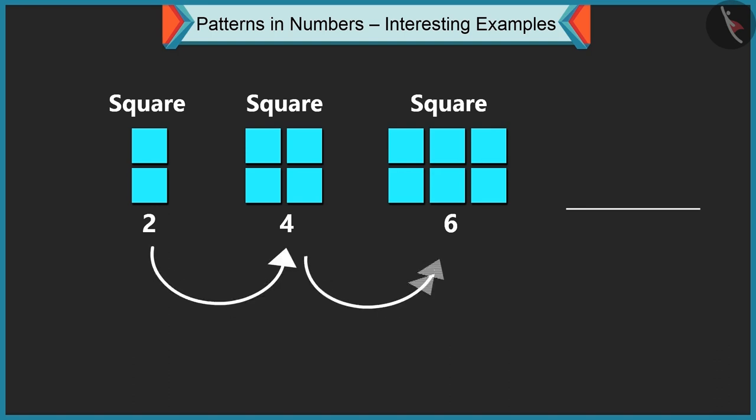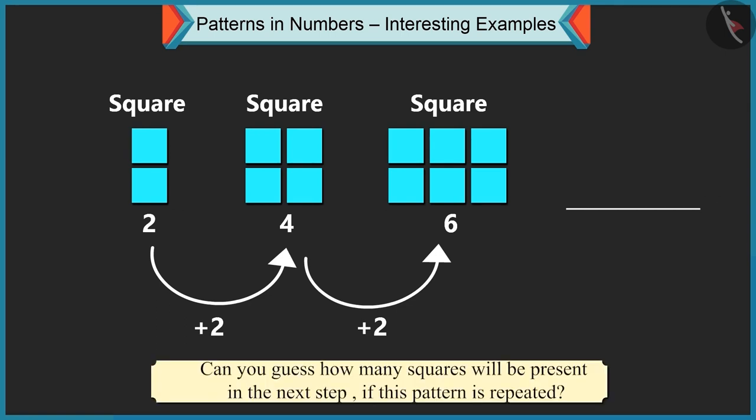In this pattern the numbers of squares are increasing. Yes, Chutki. Initially this pattern had two squares. Adding two more squares makes it four squares. Then adding two more squares makes it six squares. Similarly, every time the number of squares are increased by two. Can you guess how many squares will be present in the next step if this pattern is repeated?